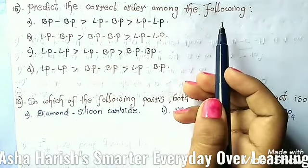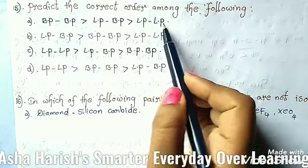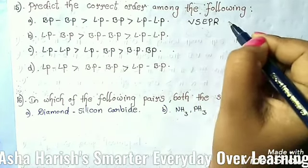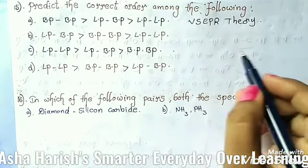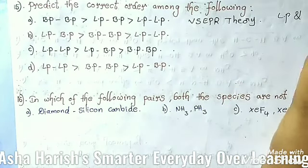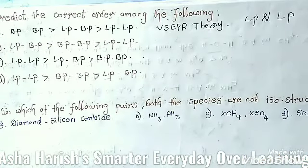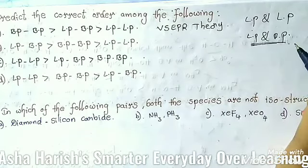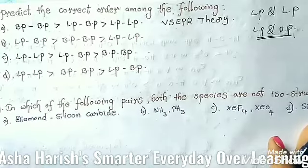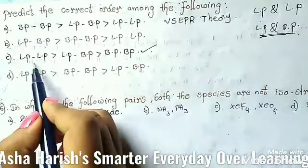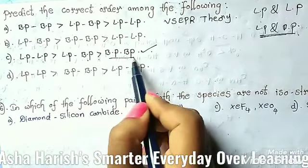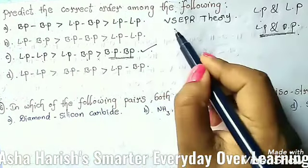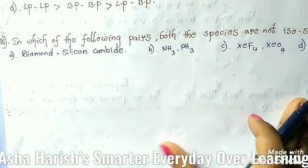Option D states that H-O-H bond angle in H2O is larger than H-C-H bond angle in CH4. This is false because H2O has 104.5° which is less than CH4's 109°28'. So option D is the false statement and is the correct answer. For Question 15 on VSEPR theory: the correct order of repulsive forces is lone pair–lone pair > lone pair–bond pair > bond pair–bond pair.